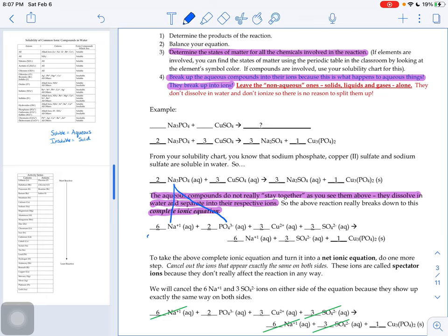Some people, when they first start doing net ionic equations, a common mistake is they know to split it up, but what they'll do is say Na little three plus one. Well, if I asked you to draw me what a sodium ion looks like at the particle level, you would probably draw me a little circle like this. There's a sodium ion.